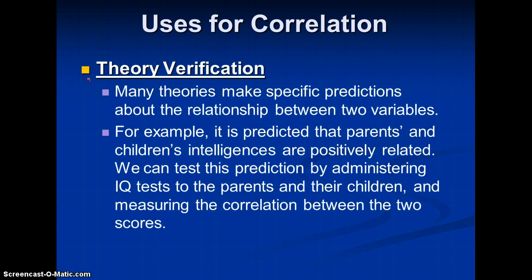We can use correlation for theory verification. Many theories make specific predictions about relationships between variables — for example, that parents' and children's intelligences are positively related. We can test this by administering IQ tests to parents and children and measuring the correlation. Of course, this all depends on accepting that IQ tests actually measure intelligence, which is a whole separate discussion, but here we're just talking about the statistics.